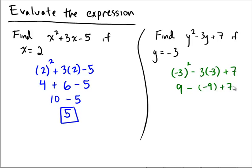Now, 9 minus negative 9 would be 18 plus 7. And that gives us a final answer of 25.